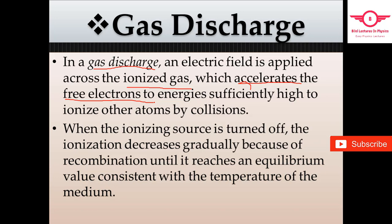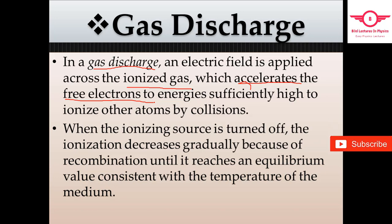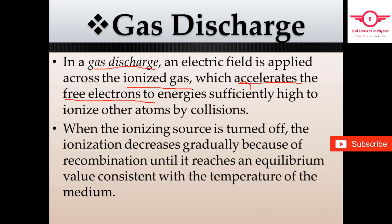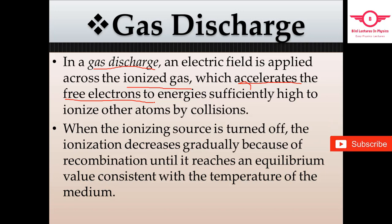The free electrons collide with and ionize other atoms — this is ionization by collision. The basic procedure is the same for both methods, but the technique differs: in gas discharge an electric field is applied, while in photo ionization an external photon source is used.